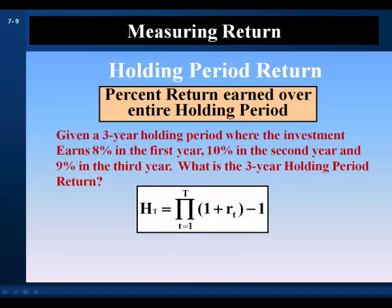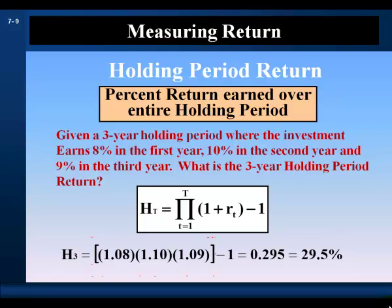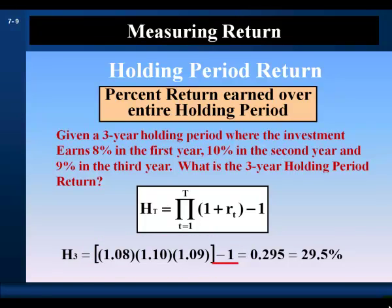We can also calculate the holding period return given the annual returns for each year in the holding period. We compound the annual returns by adding one to each annual return, multiplying them together, and then subtracting one. For example, given annual returns of 8% in year one, 10% in year two, and 9% in year three over a three-year holding period, we compound these returns and subtract one to get a holding period return of 29.5%.